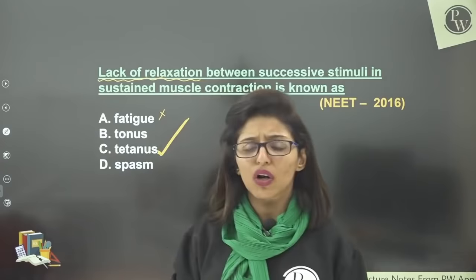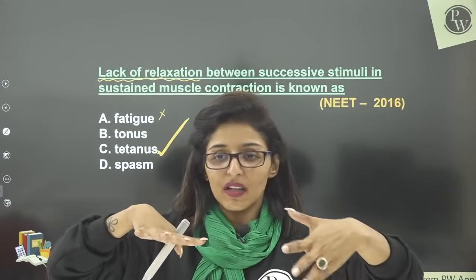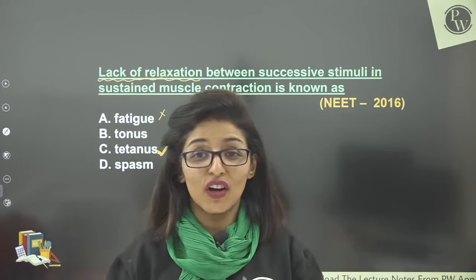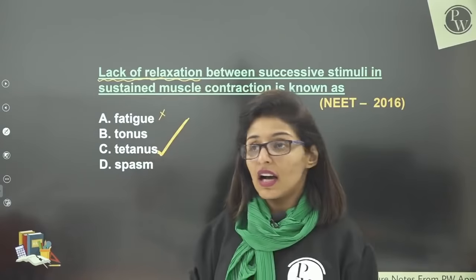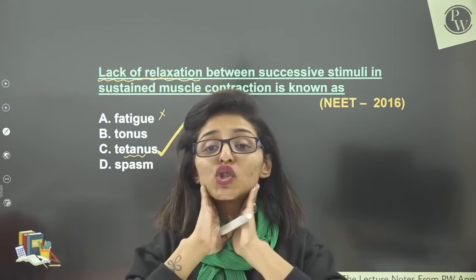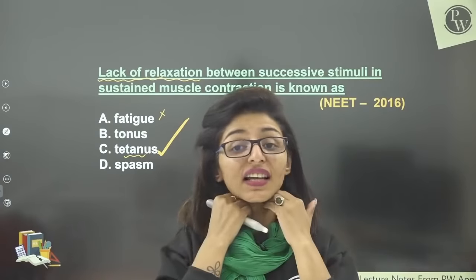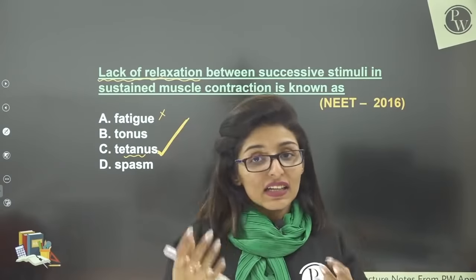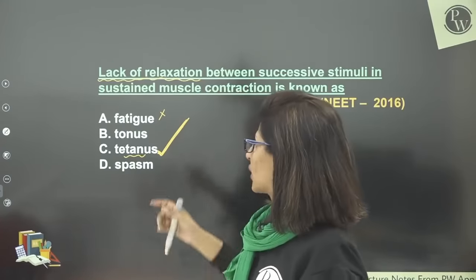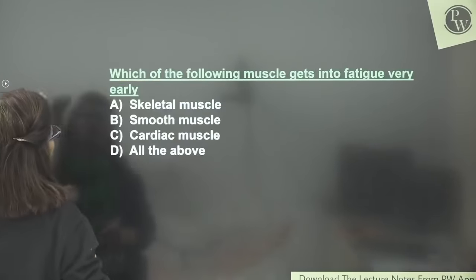Tetanus: when there is no relaxation, muscle remains in sustained contraction. You may have felt it: after stretching your leg, sometimes your fingers remain stiffened even after relaxing — that is tetanus. The disease tetanus also involves jaw and neck muscles going into permanent contraction, constricting the throat, causing death. Tetanus can be a disease, can happen due to hormone deficiency, or can be experienced normally. So if no relaxation occurs, that is tetanus.